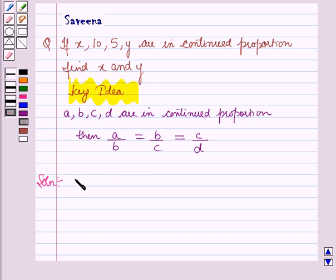Given x, 10, 5, y are in continued proportion.